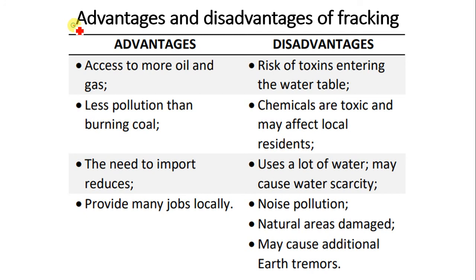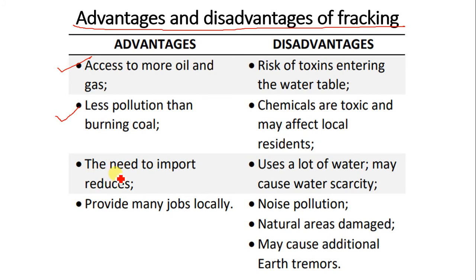The advantages of fracking include access to more oil and gas, less pollution than burning coal, a reduced need to import fossil fuels — this method is now widely used in the U.S. — and it provides many jobs for locals working in the mining or exploration site.